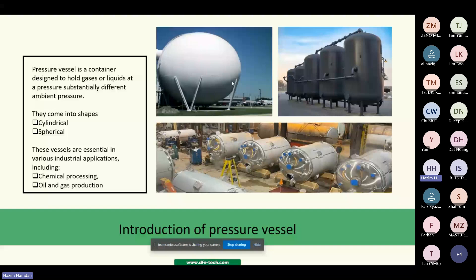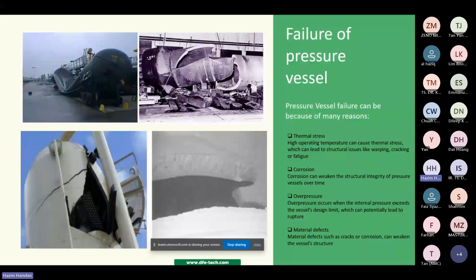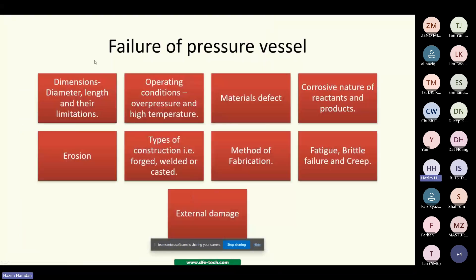Pressure vessels are important in chemical processing and oil and gas production. There are many factors that cause failure of pressure vessels. Most failures are due to thermal stress, corrosion, over-pressure, and material defects. These are examples of what causes the failure of pressure vessels.